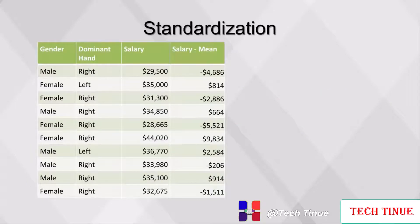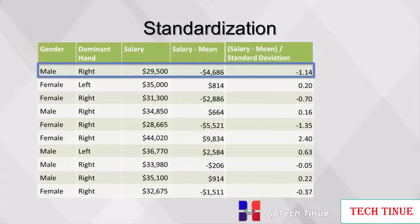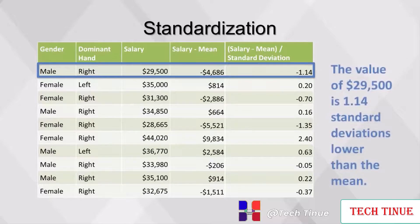Mean and standard deviation are measures that describe the distribution of a set of numbers. But what if we want to describe numbers within the set to compare to numbers within an entirely different set? We can do this by standardizing the values — in statistics, this measure is called the z-score. To standardize a value, subtract the mean and divide by the standard deviation. For example, in the first row, we divide by 4,103 to get a result of -1.14, which can be interpreted as: the value of $29,500 is 1.14 standard deviations lower than the mean.